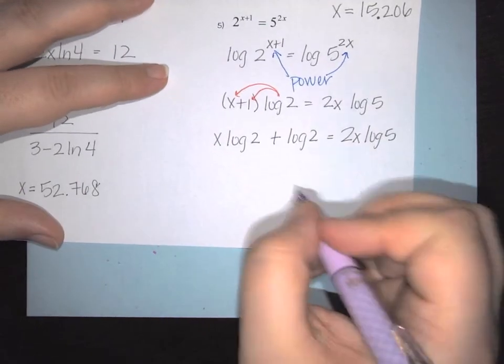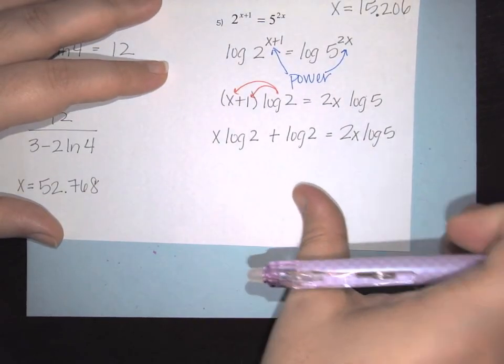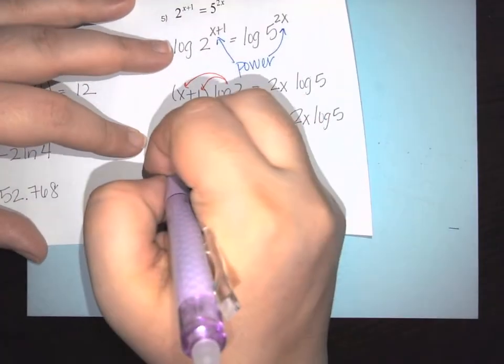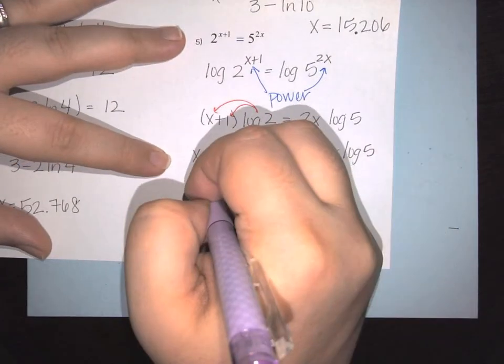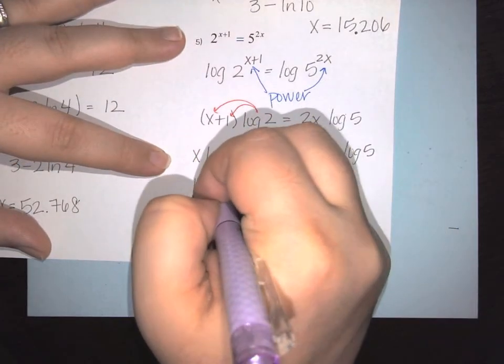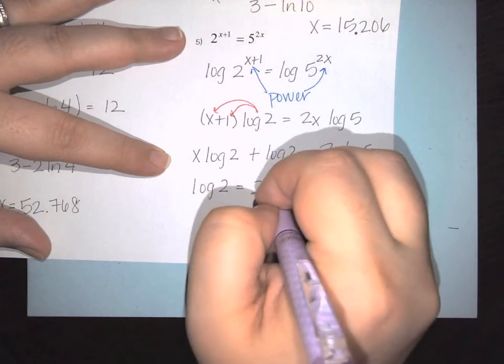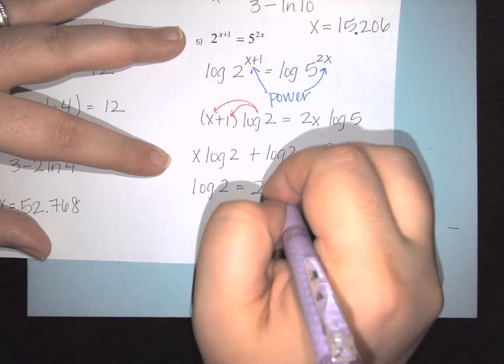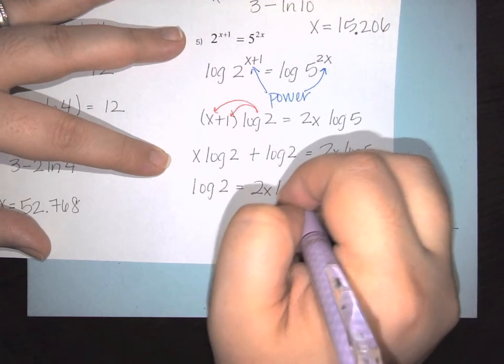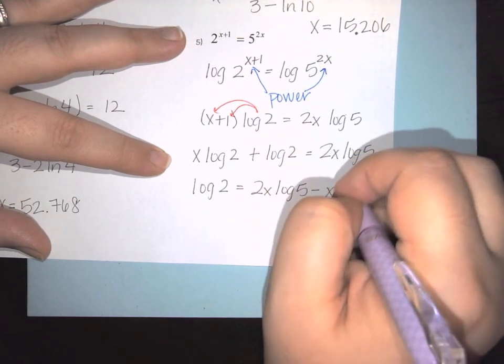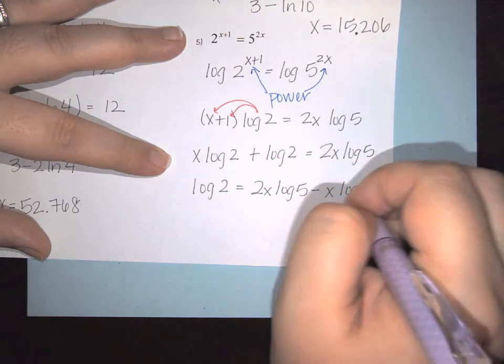I need to get everything to one side: log of 2 equals 2x log of 5 minus x log of 2.